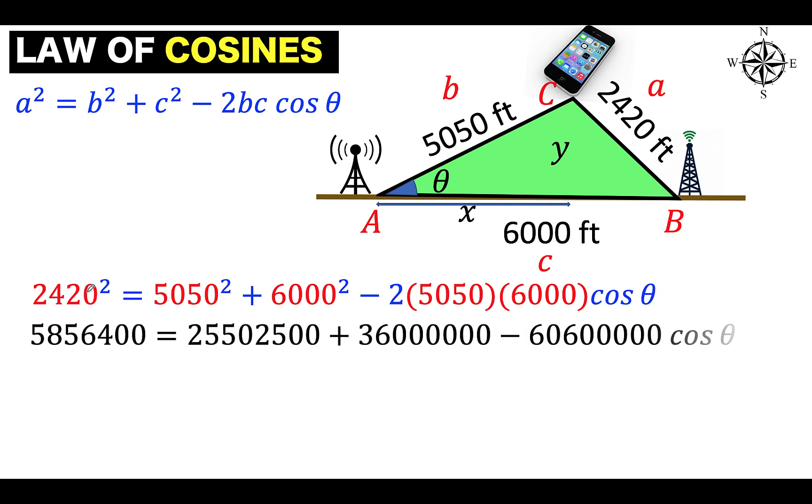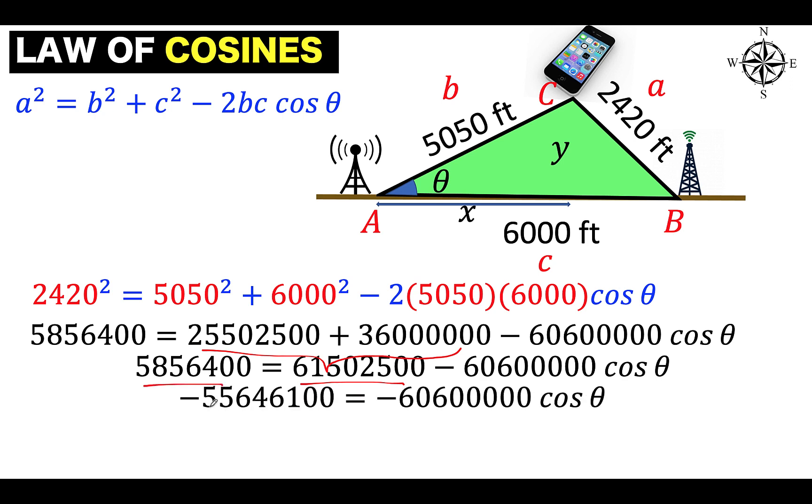So square 2,420, square 5,050, square 6,000, and then multiply 2 times 5,050 times 6,000. These are the numbers that you will arrive at. Then copy cosine theta. Then we can add these two terms together and we can now subtract this number from here, and we'll get a negative value here. Then dividing this negative number by another negative number will get a positive value for cosine theta. So all of these are calculator computation.